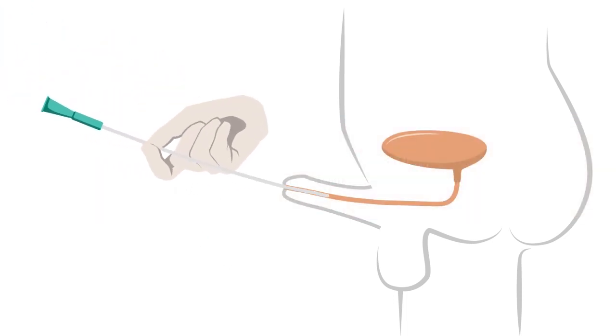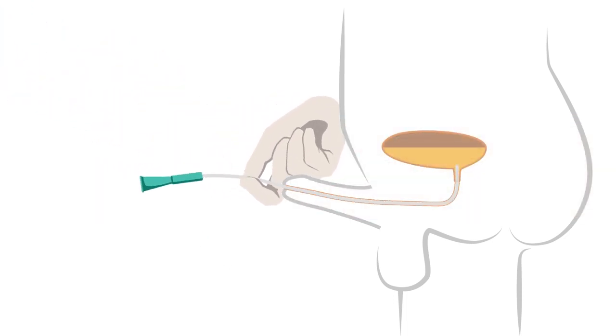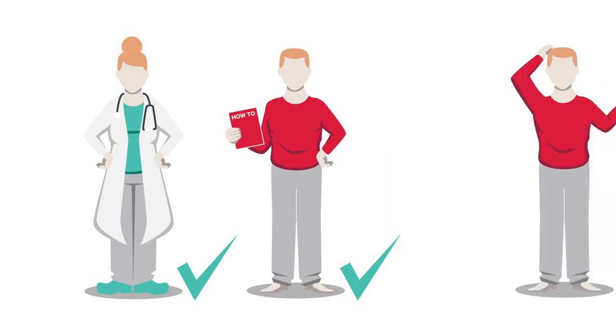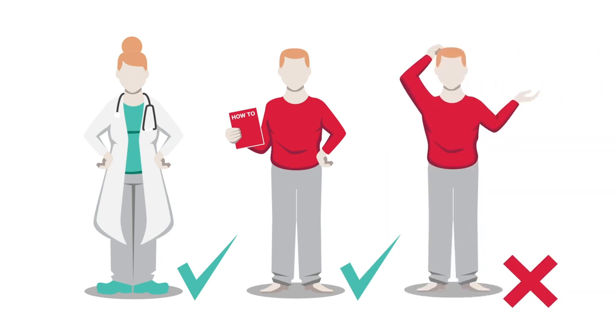Intermittent self-catheterization is performed by intermittently inserting a catheter, which is a tube to drain the urine into the urethral opening and advancing it into the bladder to allow the bladder to empty. Only people who know the correct technique of proper insertion and how to use the catheter should perform this procedure.